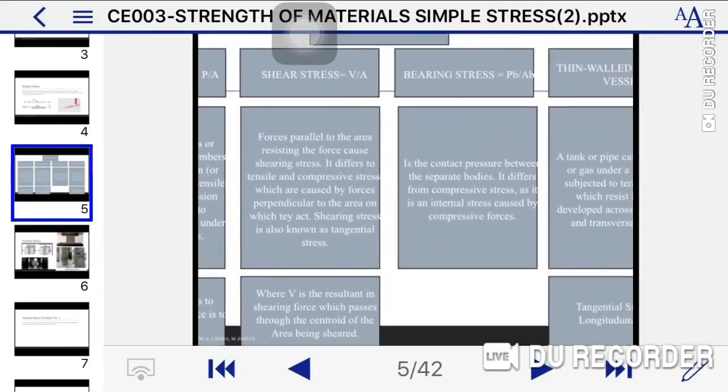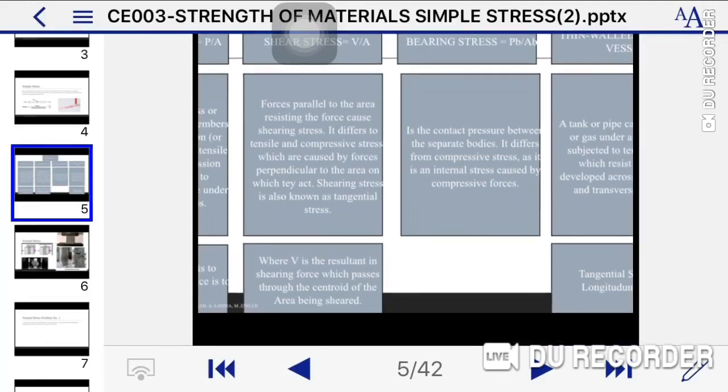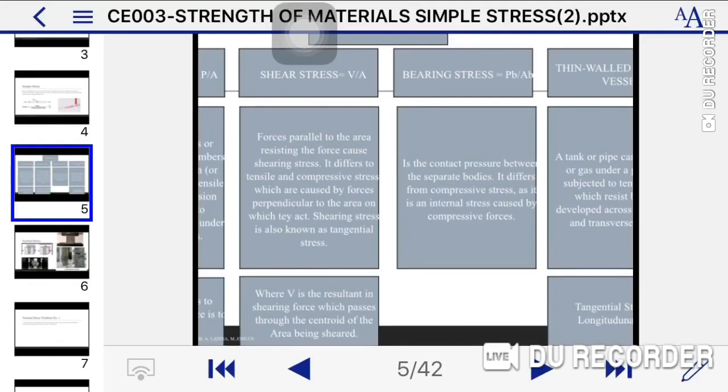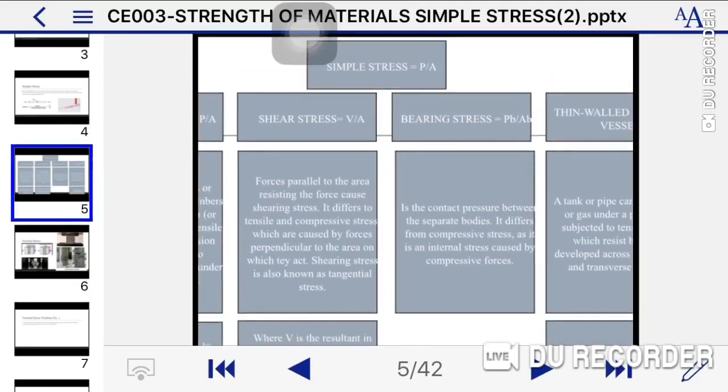Shear stress: forces parallel to the area resisting the force cause shearing stress. It differs from tensile and compressive stress, which are caused by forces perpendicular to the area. Shearing stress is also known as tangential stress, where V is the resultant shearing force which passes through the centroid of the area being sheared. The formula for shearing stress is V divided by A, where V stands for the shearing force.